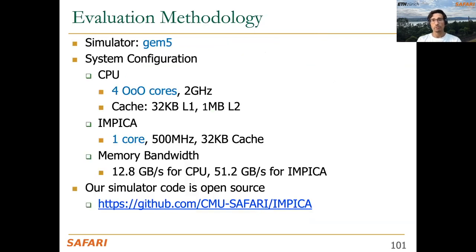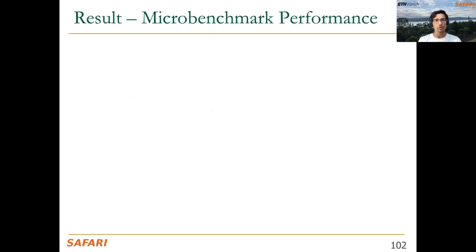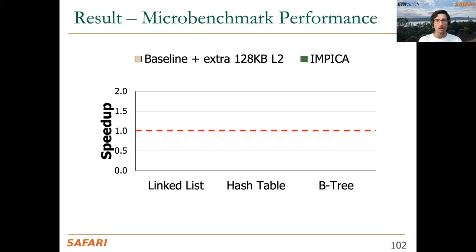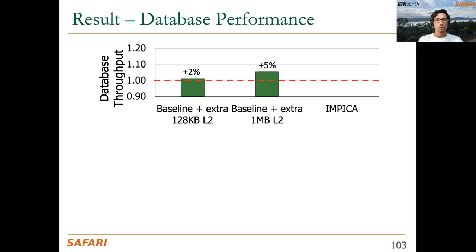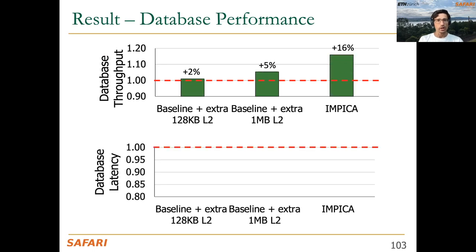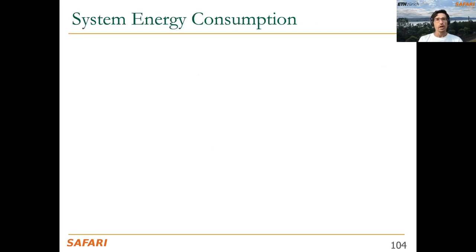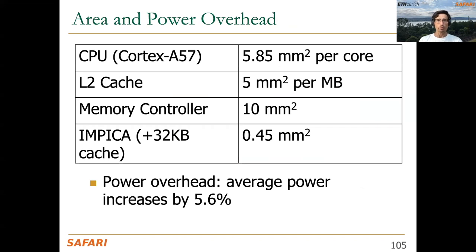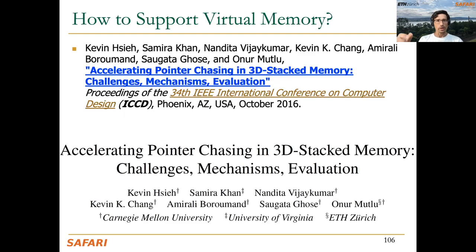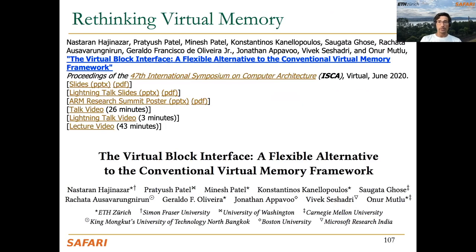INPICA was evaluated using the Gem5 simulator, with open-source code. Results show up to 90% speedup for microbenchmarks including list, hash table, and B-tree; up to 16% speedup for database performance; up to 30% reduction in database latency; and up to 41% reduction in system energy consumption. The paper also provides evaluation of area and power overhead. INPICA is preliminary work as a solution for the virtual memory problem in PIM systems, and hopefully there will be more works in this direction.